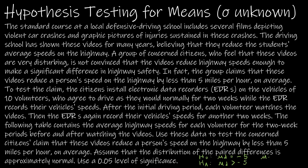We could have said the mean difference equals positive five with the alternative being less than five, but here's why we can't: when we find differences by taking the second speed minus the first speed, if the second speed is less than the first, we get a negative value — which is what we want, because we want speeds to decrease. If we used positive five, that would imply the second speed is greater than the first, meaning speeds are actually increasing.